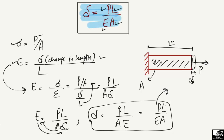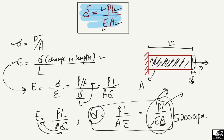This equation is used to find the deformation in a member if we know the load, the length, and the elasticity of the material — for example, for a steel rod, E is 200 GPa — and the cross-sectional area. This is one of the fundamental equations in strength of materials. Hope you understand, and don't forget to subscribe for daily civil engineering videos. Thank you for watching.